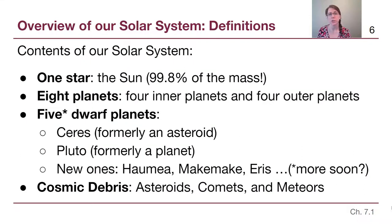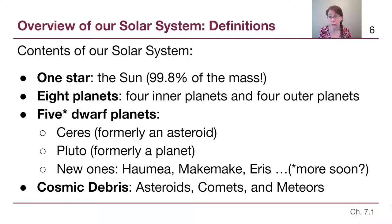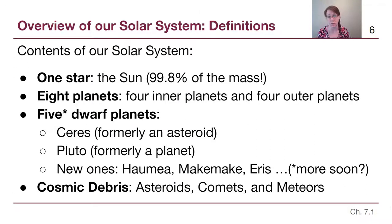To understand what we mean by our solar system, a couple of key things: capital Solar System means our particular sun and everything that orbits it. Any star may have its own system of planets. In our particular solar system, we have one star — the sun — and the sun is about 99.8% of the total mass in the entire solar system. The reason everything orbits the sun is because the sun has so much mass, unlike binary star systems where two stars orbit each other because they have similar amounts of mass.